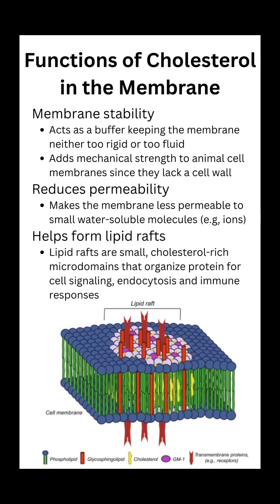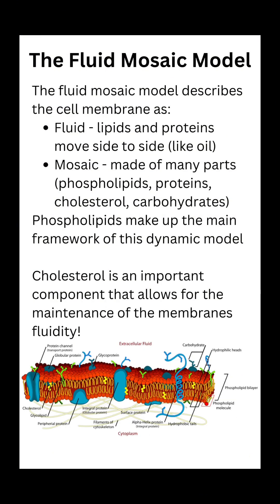Cholesterol also helps form lipid rafts, which are specialized patches of membrane lipids that play key roles in immune signaling, endocytosis, and many other cellular processes. As a reminder, the plasma membrane is often described as a fluid mosaic model, because our lipids and proteins move laterally and the membrane is a mix of many different components. Cholesterol happens to be one of those components that allows the membrane to stay properly fluid and functional.